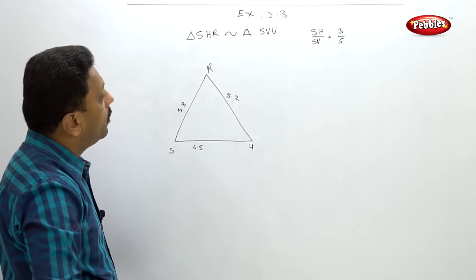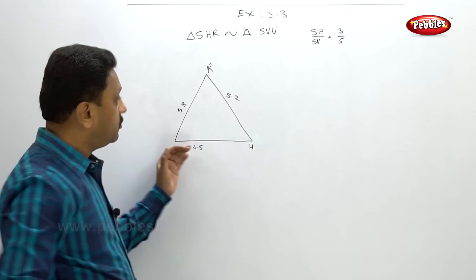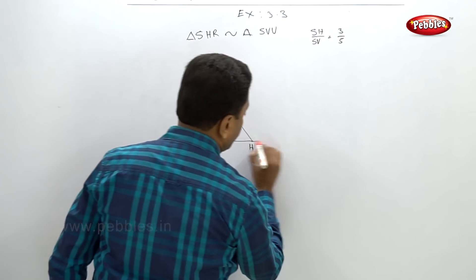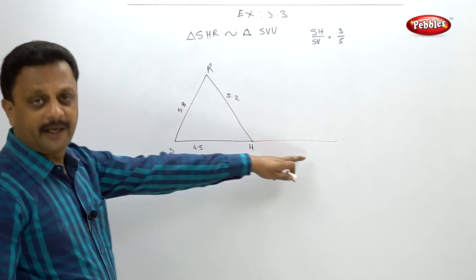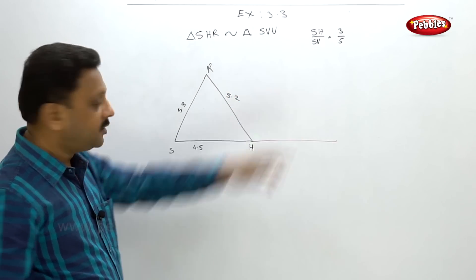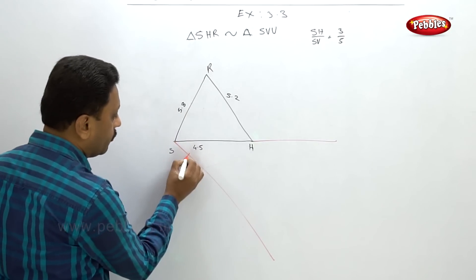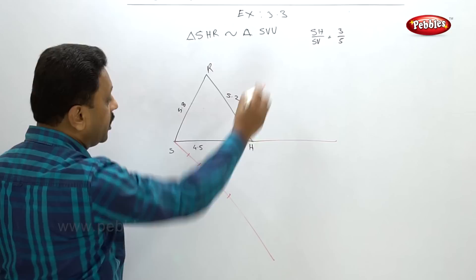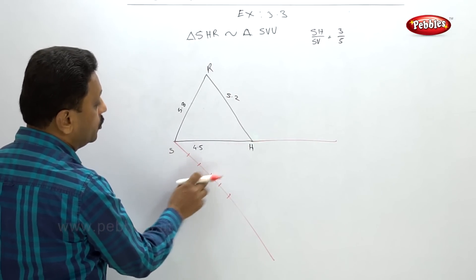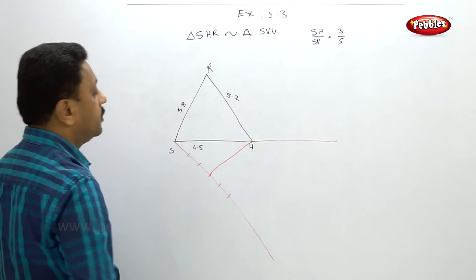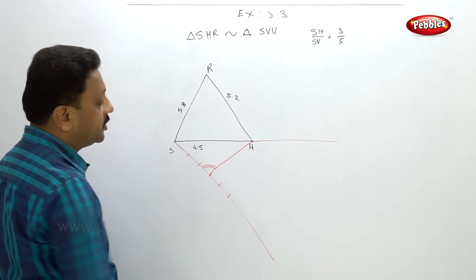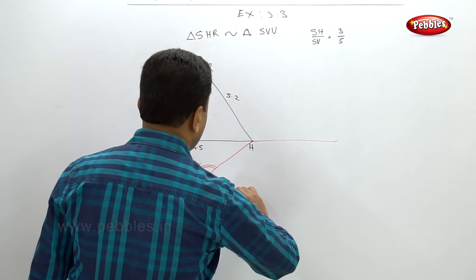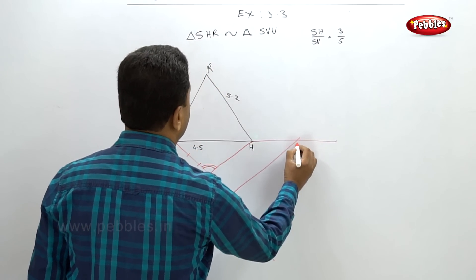S is the common point. SV is 5, so V will come on an extended line from SH. Take any line, make 5 parts: 1, 2, 3, 4, 5. Connect H to the 3rd part, then draw a congruent angle at this point. That angle gives one parallel line which connects to give point V.